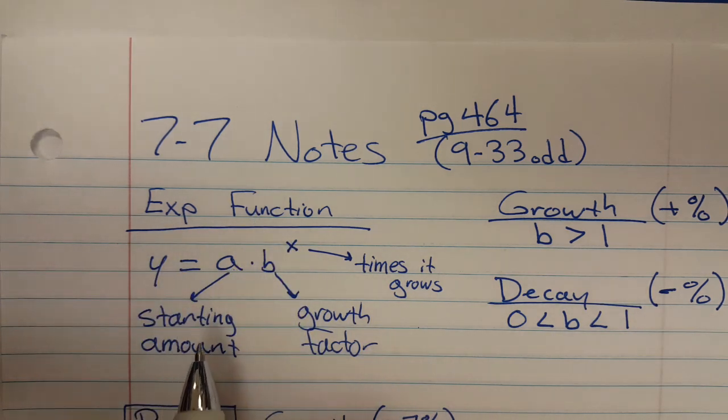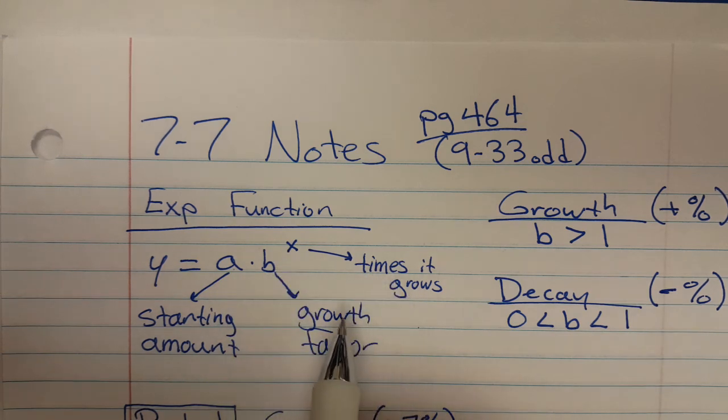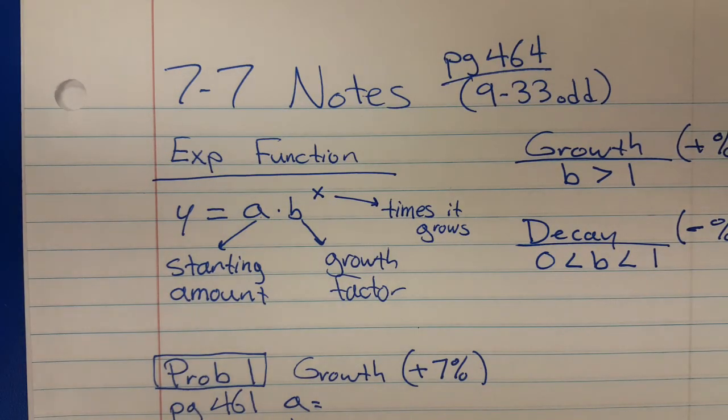A is always going to be your starting amount. B is always going to be your growth factor, and x is going to be the number of times it grows, or how many times do you apply that growth factor? How many times does it double? How many times does it get chopped in half? So on and so forth.